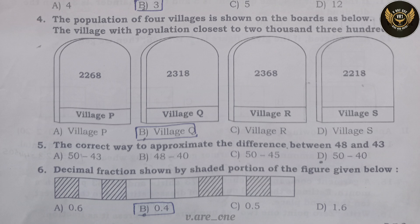Fifth, the correct way to approximate the difference between 48 and 43 is Option D: 50 to 40.